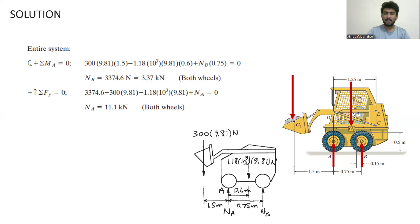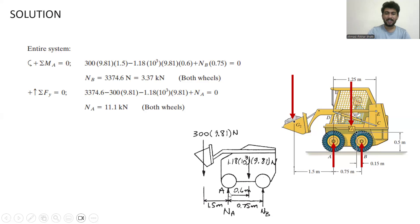The reaction force at wheel B is 3.37 kilonewtons, and this force acts on both wheels B. Applying equilibrium in the vertical direction, we include the weight at G2, the weight at G1, and the upward forces at points A and B, where B is 3.37 kilonewtons. The reaction force at tire A is therefore 11.1 kilonewtons, and this force also acts on both wheels A.